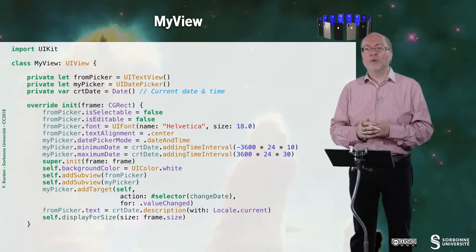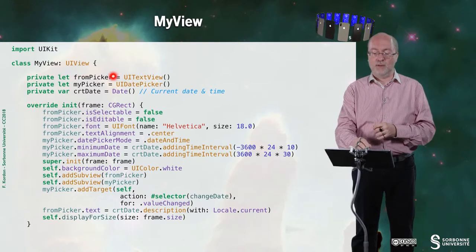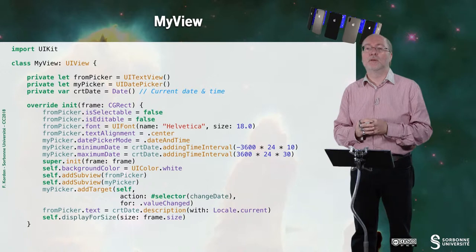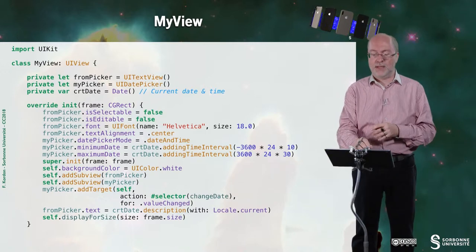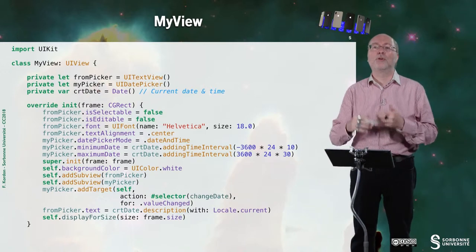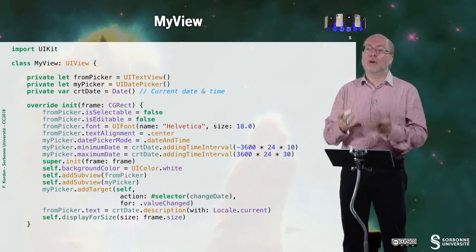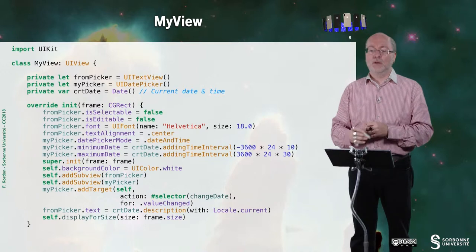Now let's have a look at my view. So basically I have a UI text view that will just display the time I fetch from my picker. Then I have my picker, and then I have the current date. I will compute automatically here when I run the application.